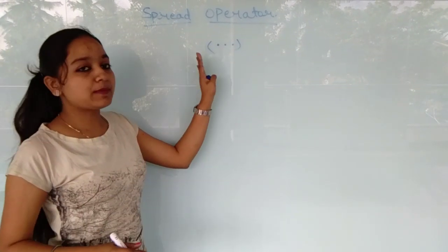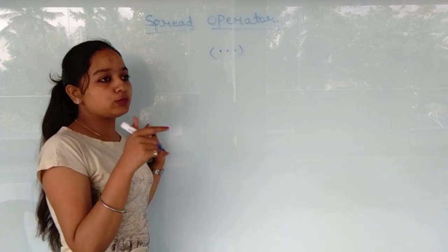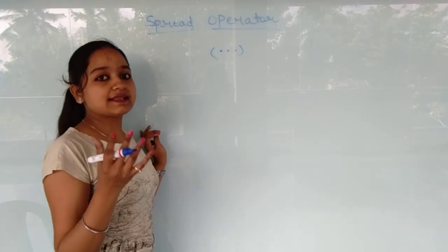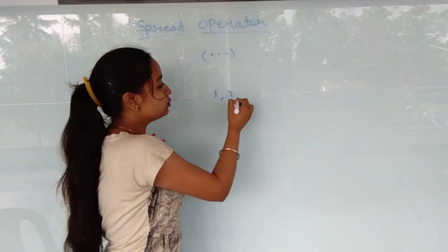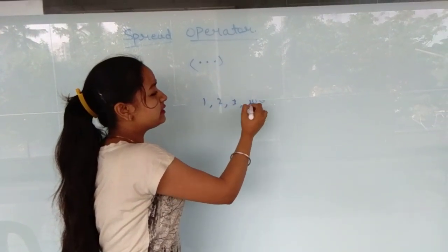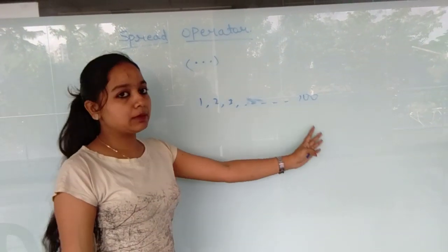We can denote spread operators by three dots. If we write three dots, suppose we take the example of long arrays. Like if we write one, two, three and we have to create something up to ten or hundred, we don't write every number here.